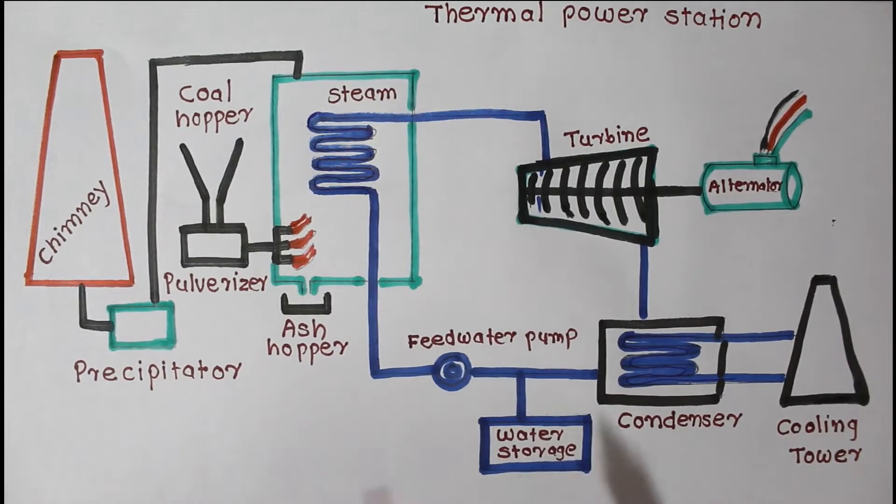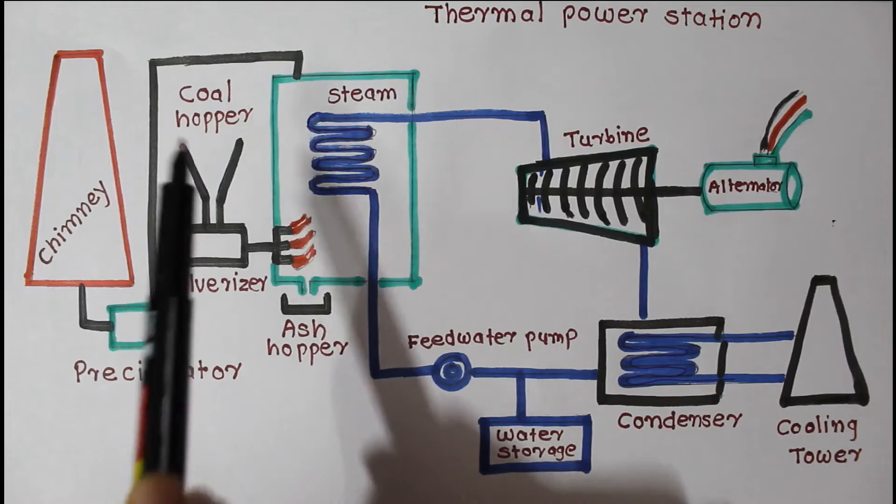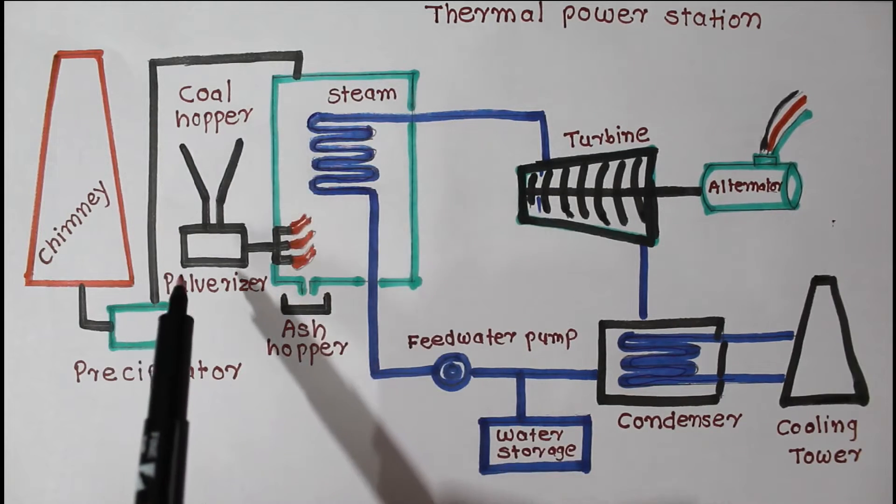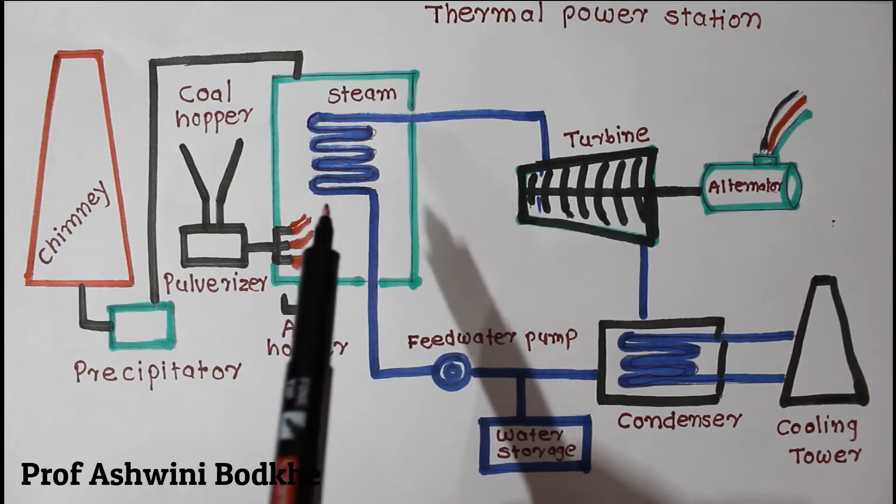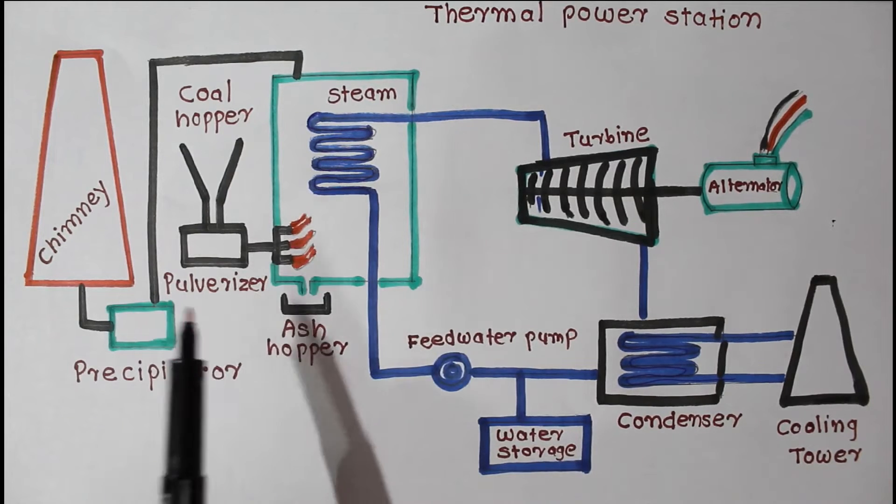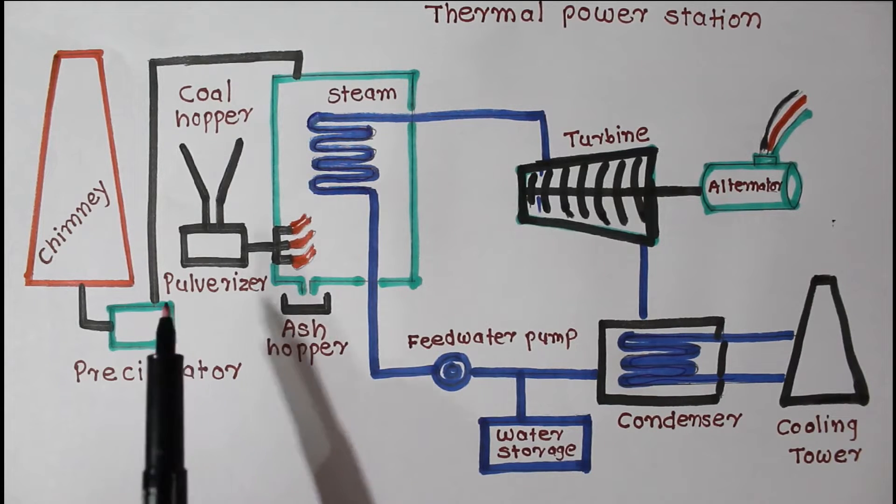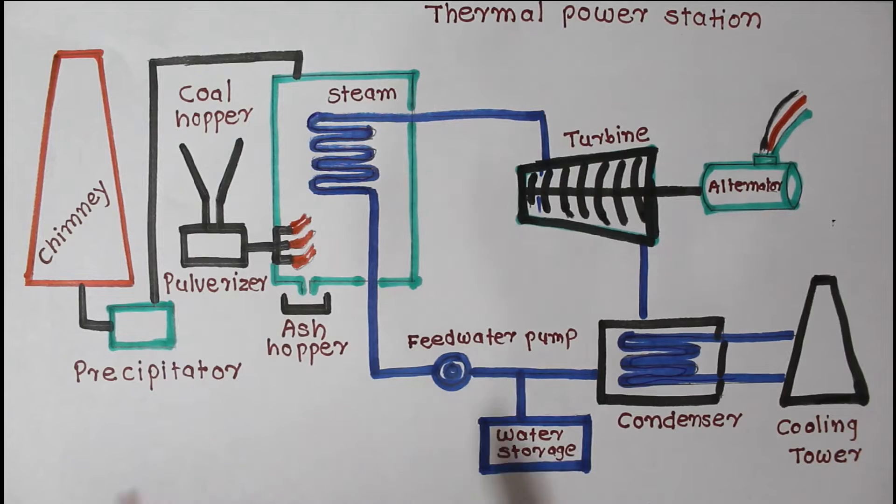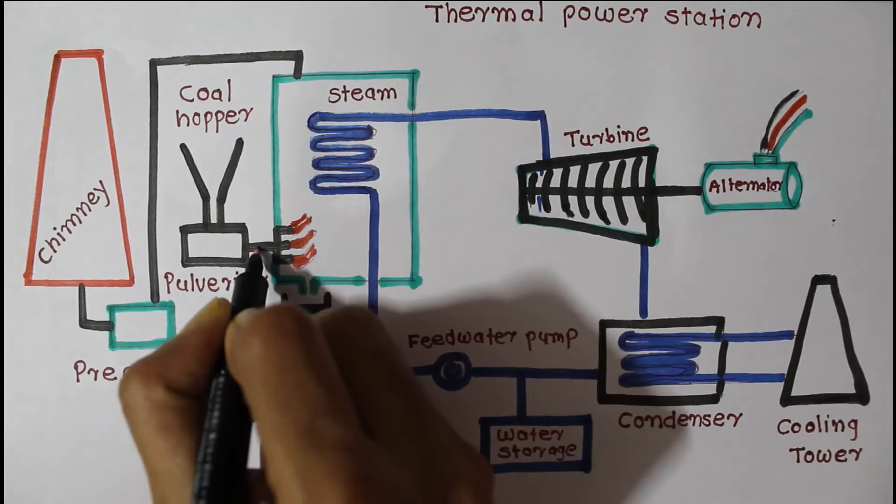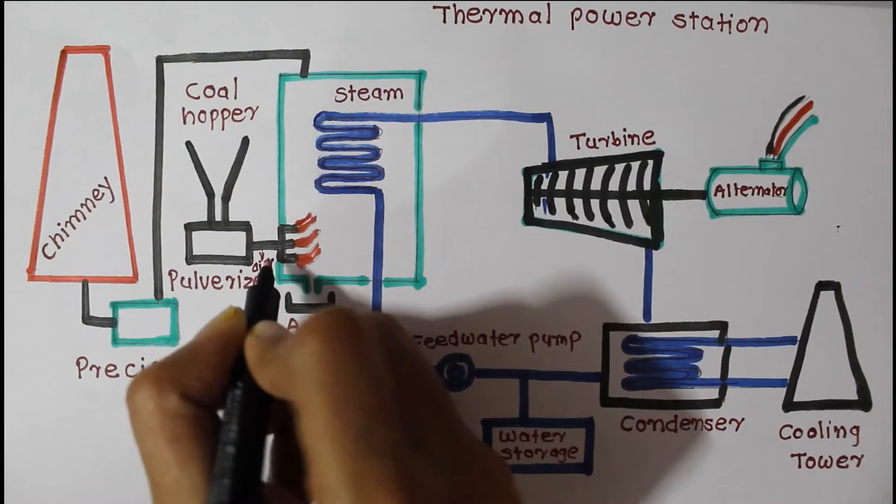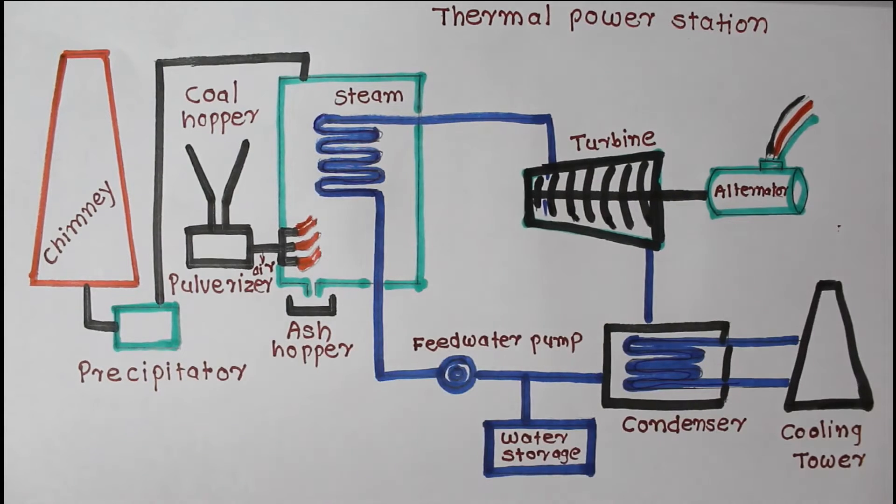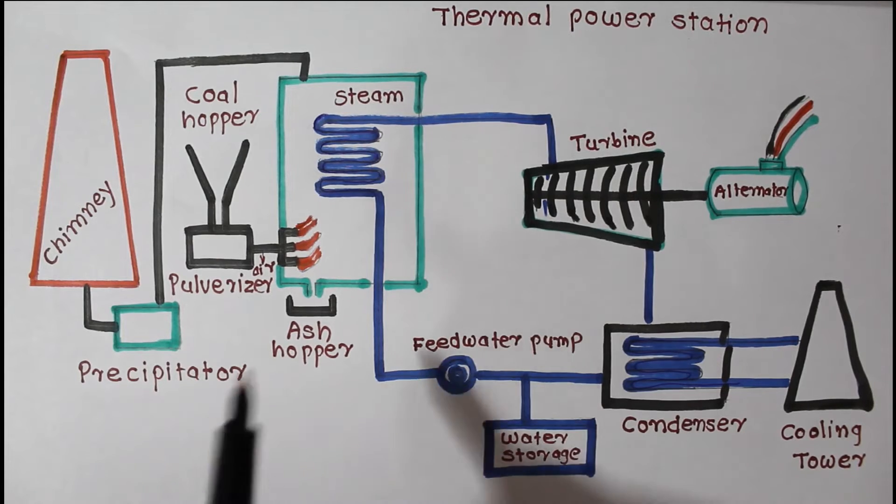Let's see one by one all components or equipment. First is this coal hopper. The function of coal hopper is automatic feeding of coal to the boiler furnace. Next is pulverizers. In modern thermal power plants, coal is pulverized, that is ground to dust-like size and carried to the furnace stream of hot air. Pulverizing is a means of exposing a large surface area to the action of oxygen.